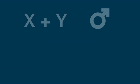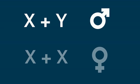If an individual has both an X and a Y chromosome, they will be male, while females have two X chromosomes.